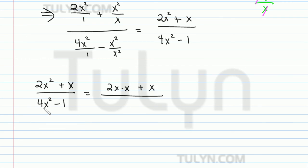I haven't changed anything. And then 4 times x squared, well, 4 is 2 squared, right? So 2 squared times x squared minus 1 squared, which is just 1. And I'll show you where I'm going with this.